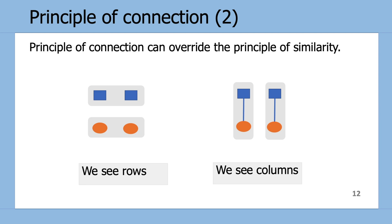The left-hand side, the similar shapes and colors, our brains perceive those as rows following the Principle of Similarity. But as soon as those vertical links between the shapes are added on the right-hand side, our brain no longer perceives rows, but instead columns, which represents how the Principle of Connection can override the Principle of Similarity.